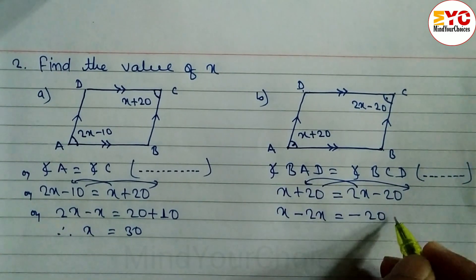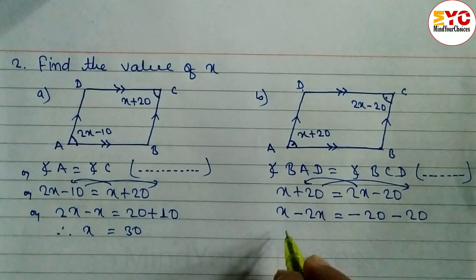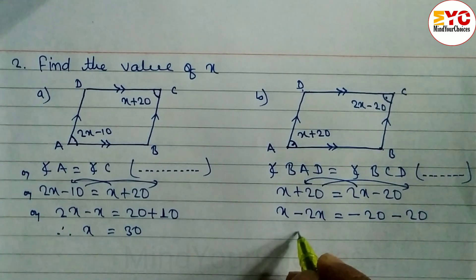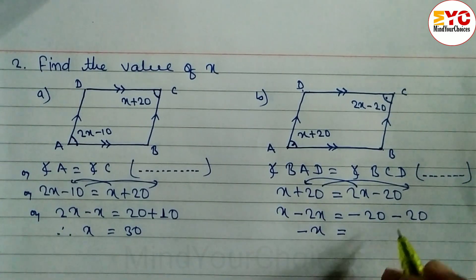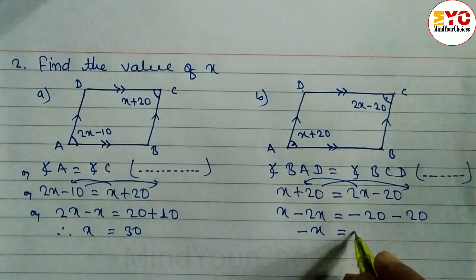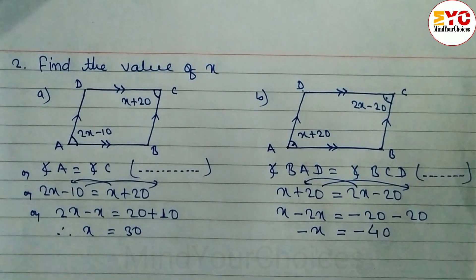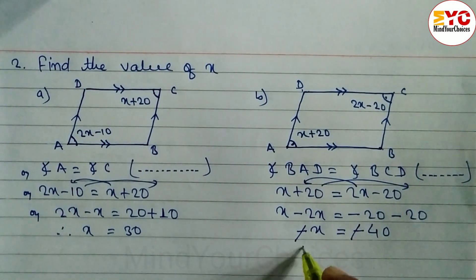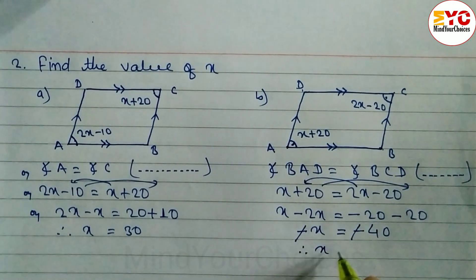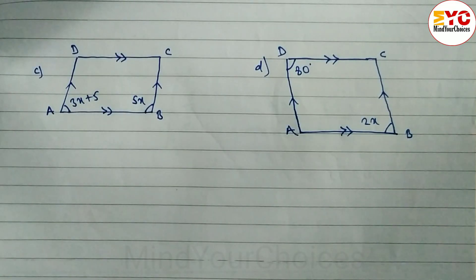When you take terms to the right side you have to change the sign. When you subtract x minus 2x we get minus x is equal to minus 20 minus 20. Minus minus becomes plus, so we add to get 40. The negatives cancel and therefore the value of x is equal to 40.